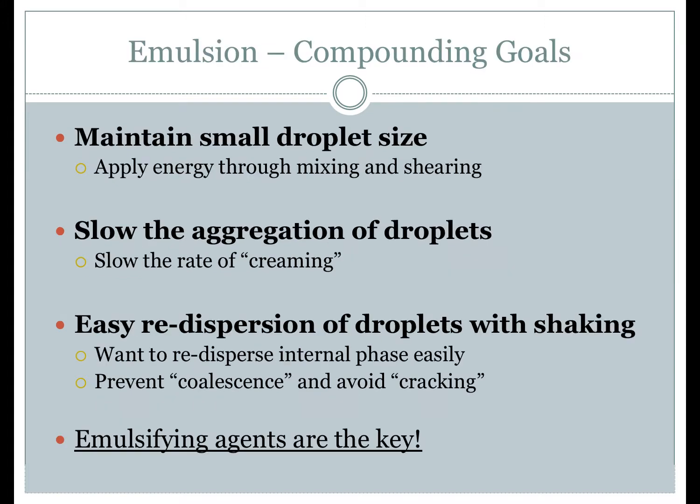When compounding an emulsion, there are three main compounding goals. The first goal is that the internal phase should be dispersed as very small, fine droplets. This is influenced by the mechanical method used for mixing and shearing the two immiscible liquids. For extemporaneous compounding, a rough-sided Wedgewood mortar has traditionally been used for emulsification. Simple and relatively inexpensive hand homogenizers and high-speed blenders are also available and may give an even finer and more uniform droplet.